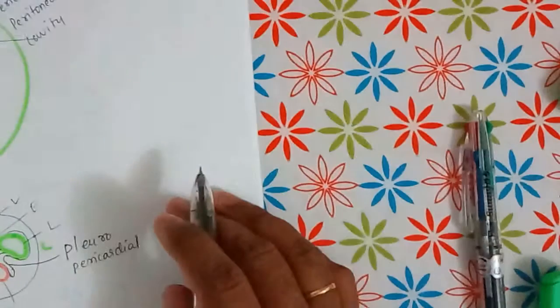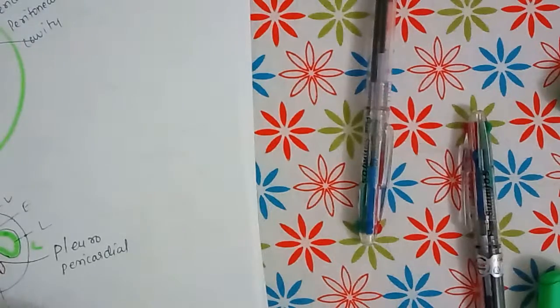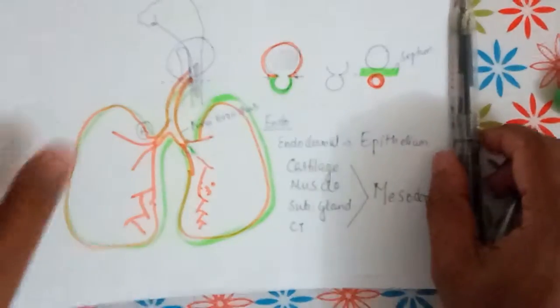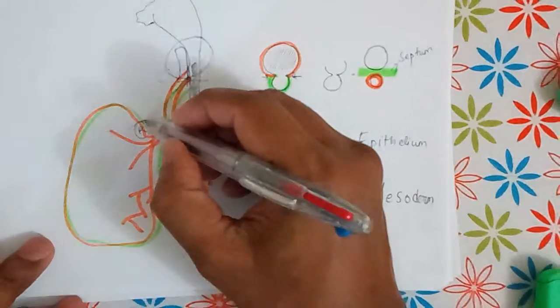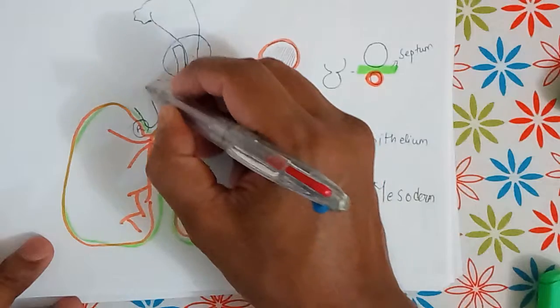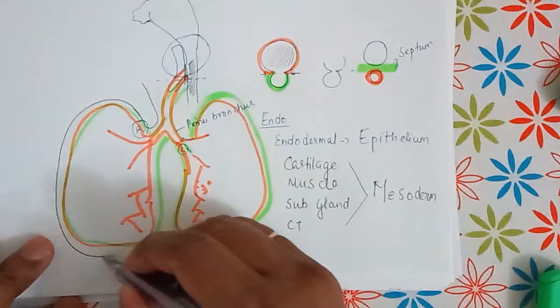Now let us see this diagram showing the fold of the membrane around the developing lung.